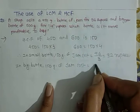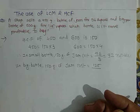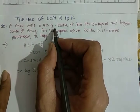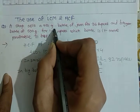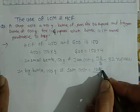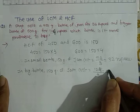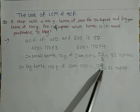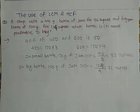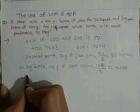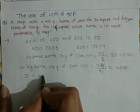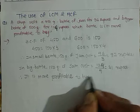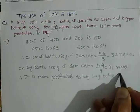In the big bottle, 150 grams of jam costs 124 divided by 4, that is 31 rupees. Thus it is more profitable to buy a 600 gram bottle of jam because the cost is lower.